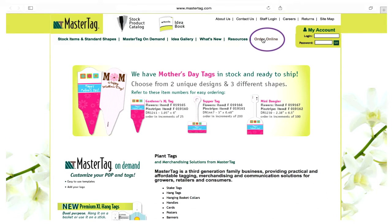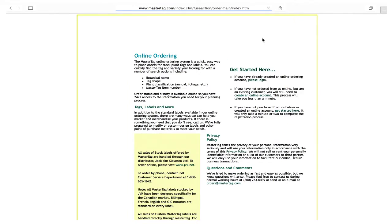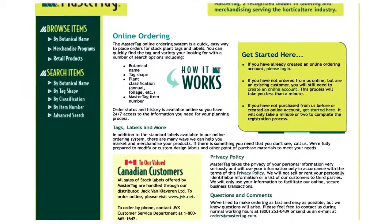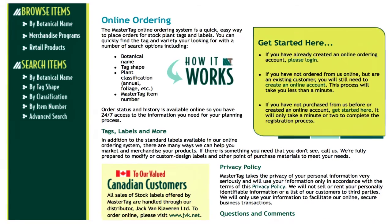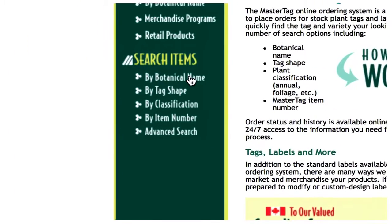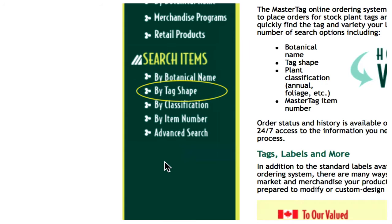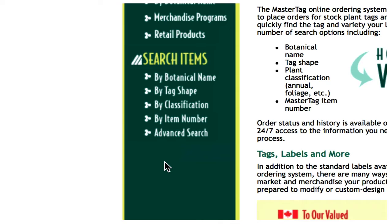The MasterTag Online Ordering System is an easy way to place orders for stock plant tags and labels. You can quickly find the tag and variety you're looking for with a number of search options, to include botanical name, tag shape, plant classification, or master tag item number. Order status and history is available online so you have 24/7 access to the information you need for your planning process. Follow us as we show you how it works.